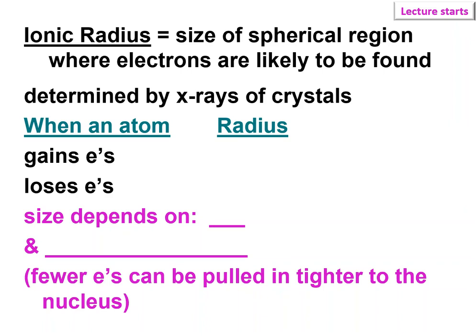We've looked at sizes of atoms already. Now we're going to look at what happens when an atom becomes an ion. And it's pretty much like you would think.